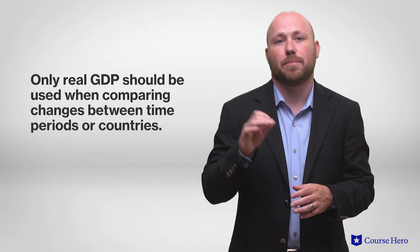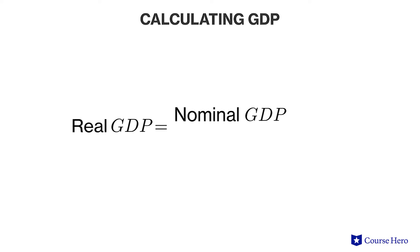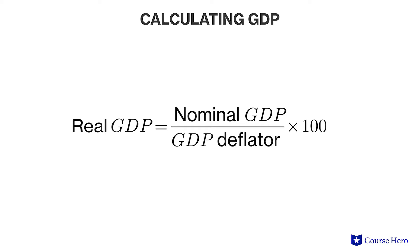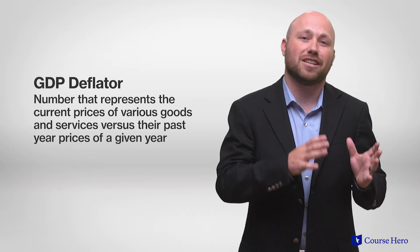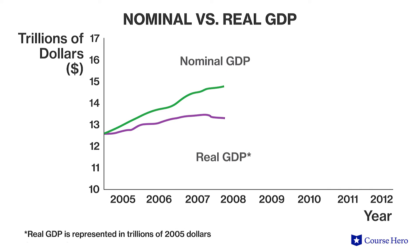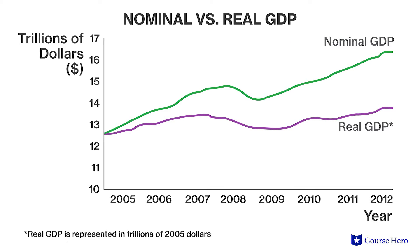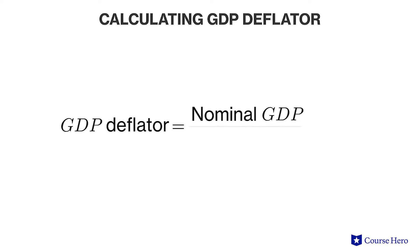GDP can be measured in either form, but only real GDP should be used when comparing changes between time periods or between countries, as nominal GDP can become distorted by fluctuating changes in price levels. The formula for calculating real GDP is nominal GDP divided by the GDP deflator, multiplied by 100. The GDP deflator represents current prices of various goods and services versus their past year prices and is always equal to 100 in the base year. To calculate it, divide nominal GDP by real GDP and multiply by 100.